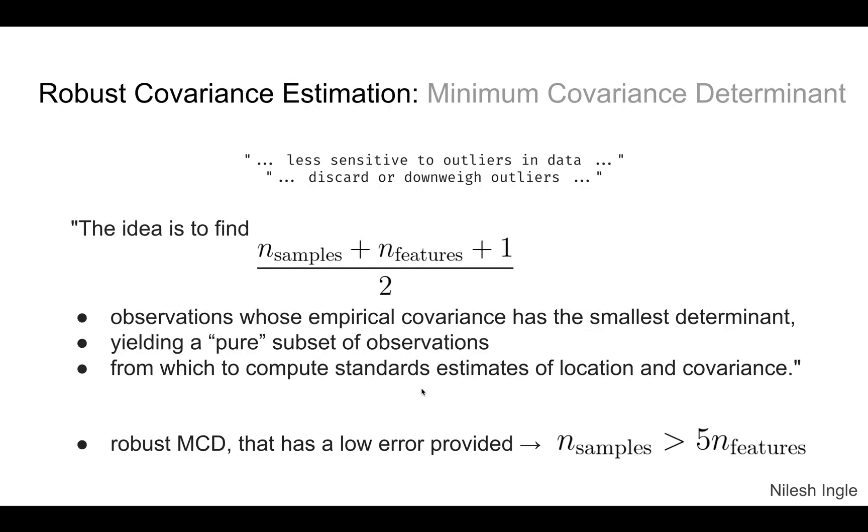There is yet another method which is minimum covariance determinant which is part of the robust covariance estimation methods in scikit-learn. The idea is that if the covariance matrix has outliers in it then again it can create problems in downstream calculations. There is this method which can help find the outliers and either discard them completely or add a weight to those outliers so that their importance is reduced.